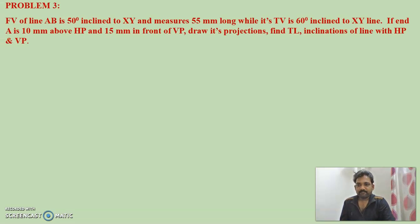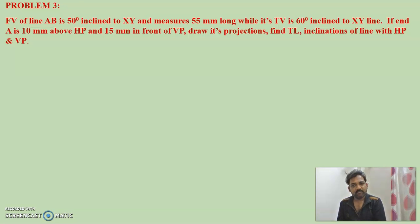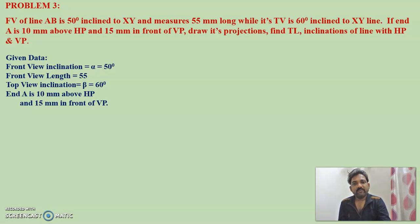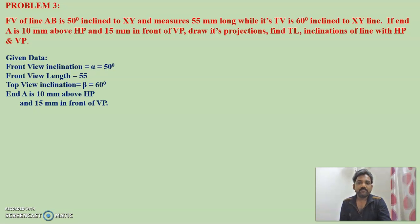Let's discuss the third problem. The front view of line AB is 50 degrees inclined to XY and measures 55 millimeters long, while its top view is 60 degrees inclined to XY. End A is 10 millimeters above HP and 15 millimeters in front of VP. Draw projections and find the true length and inclination of the line with HP and VP. Given data: alpha equals 50 degrees, front view length equals 55mm, beta equals 60 degrees, and position of point A.